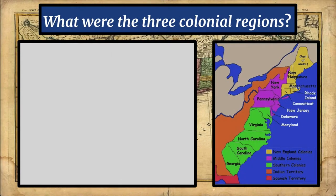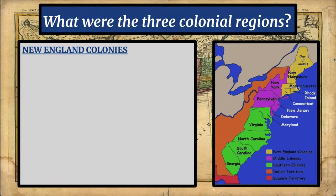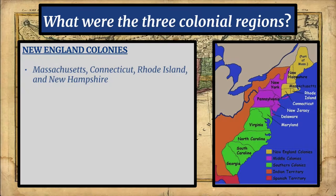Eventually those two colonies became 13 colonies — we're fast forwarding in history, giving you the 35,000-foot overview. The left side essential question is: what were the three colonial regions? The first region is the New England colonies, which consisted of Massachusetts, Connecticut, Rhode Island, and New Hampshire. Those are considered the New England colonies.